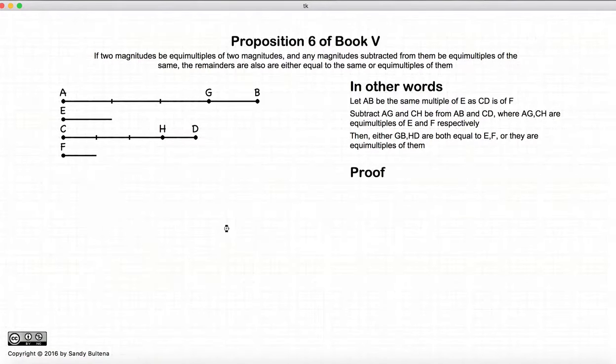So let's begin our proof. So we have our initial conditions: AB and CD are equal multiples of E and F, AG and CH are equal multiples of E and F.